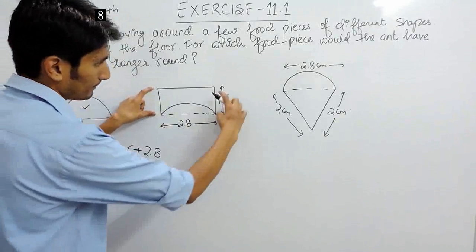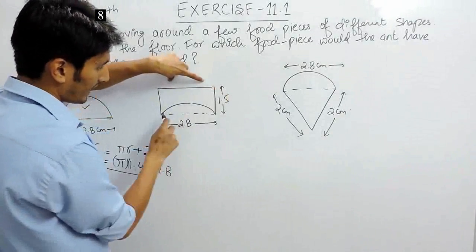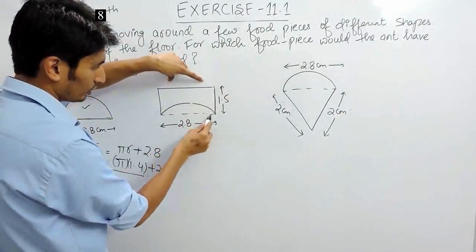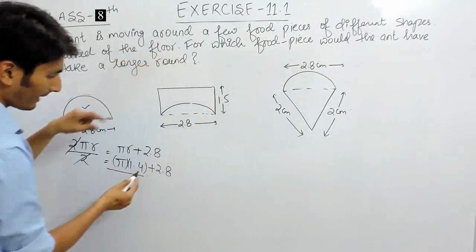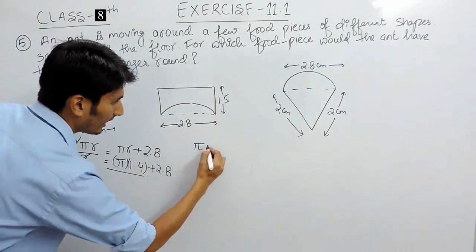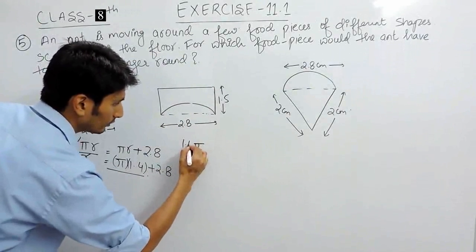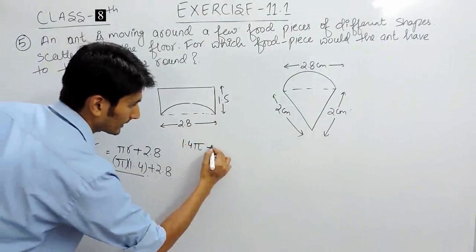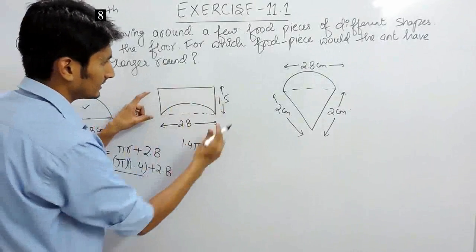perimeter is this plus this plus this plus this and this length. We know that this length is same as this, so this length is πr, r here is 1.4 plus and the other length is,